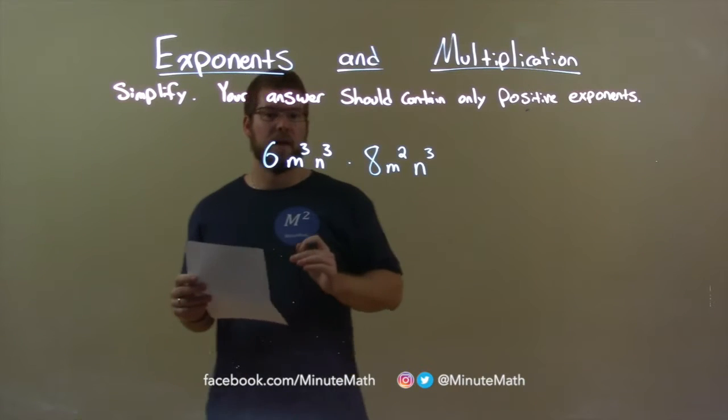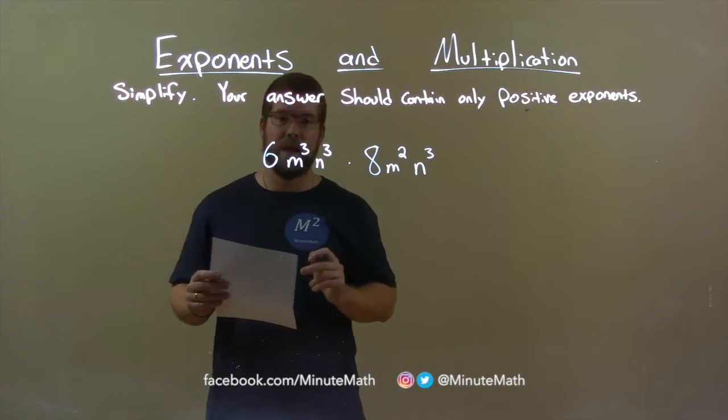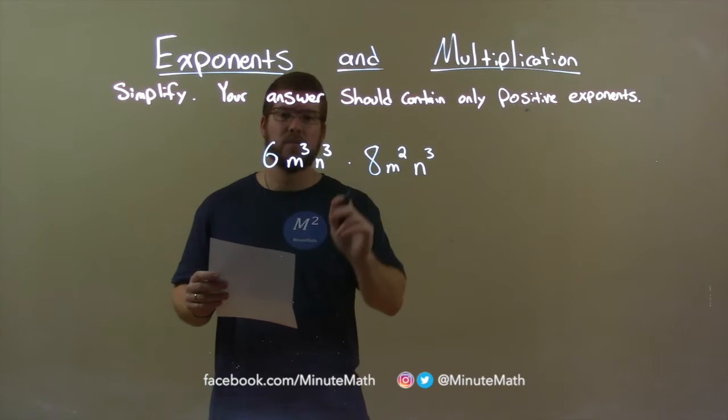Well, the first thing I look at is my coefficient. I have 6 and I have an 8. Well, 6 times 8 is 48.